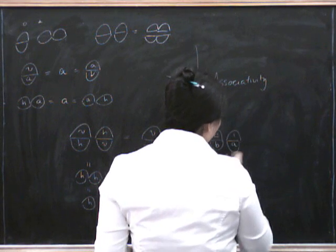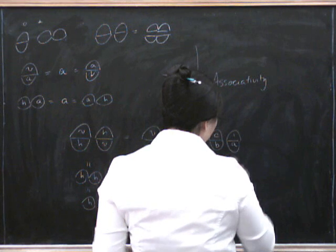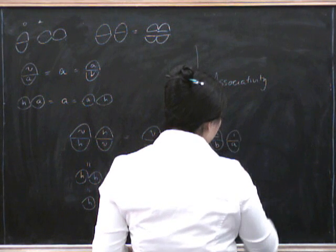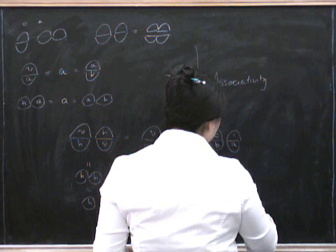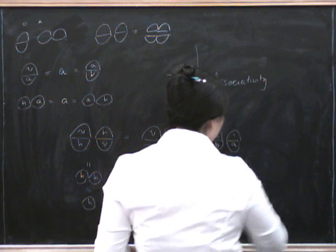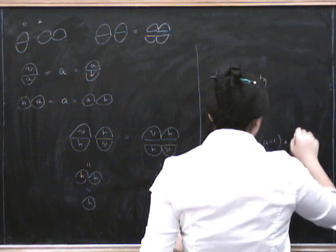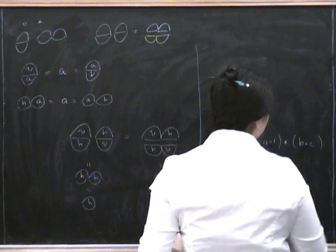If we do this this way, we get A vertically composed with 1, star with B vertically composed with C.